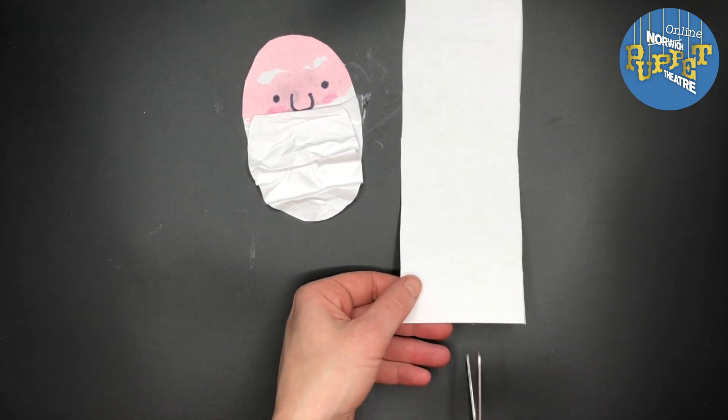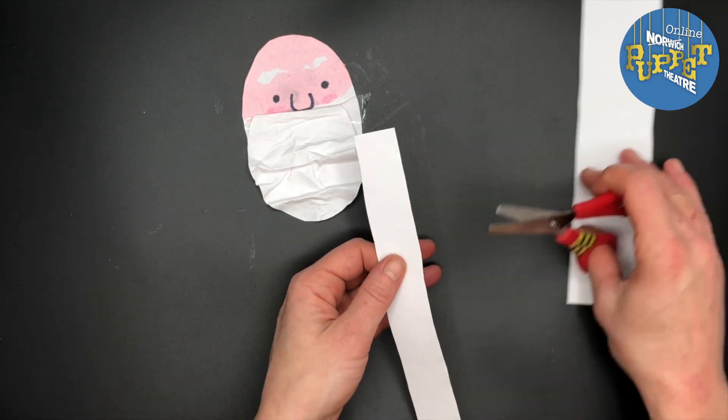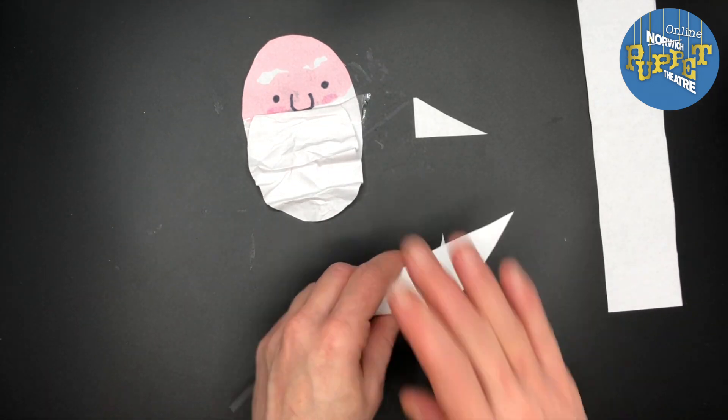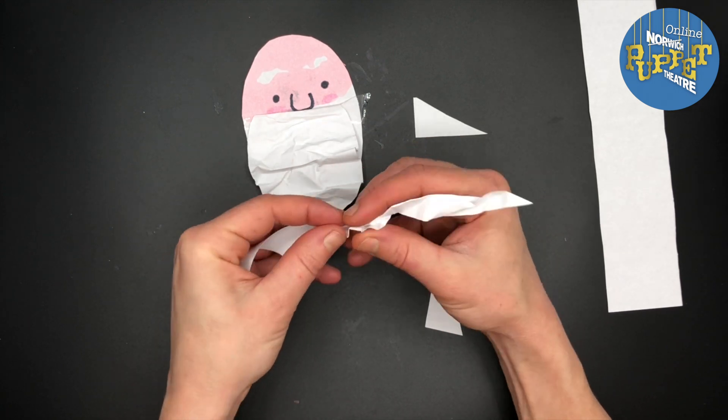Take another one of the bits of paper that you cut earlier and cut off a strip. Cut off one corner from each end so your strip has points. Now scrunch and twist the strip of paper. This is going to be Santa's moustache.